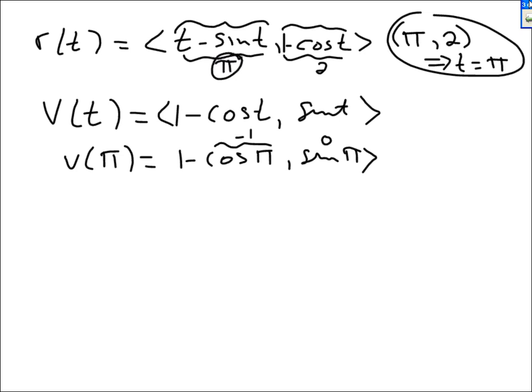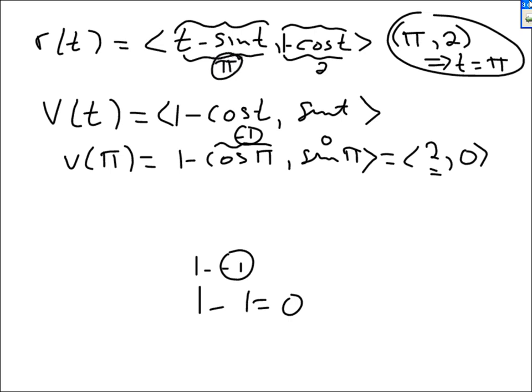Cosine of π is negative 1. So 1 minus negative 1 is 2. That number is not 1 — it's 1 minus a different number than 1, so it's not 0. 1 minus negative 1 is 2, and sine of π is 0. So v of π is (2, 0).